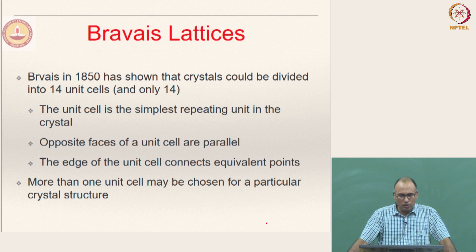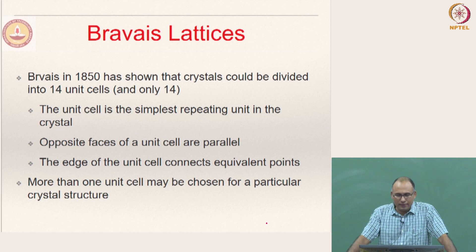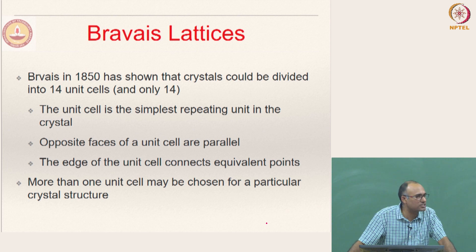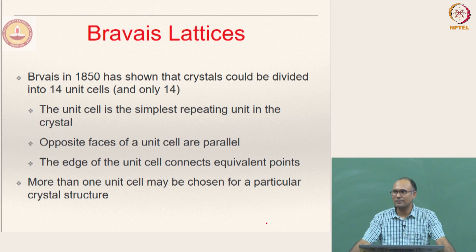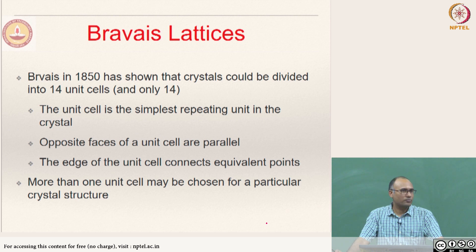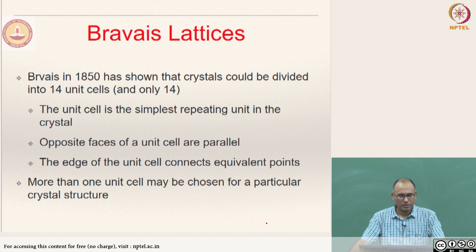Now we look at another important concept called Bravais lattices. This person called Bravais in the 1800s showed that crystals can be divided into primarily 14 different kinds of unit cells, and you will only ever have these 14 types. All crystal structures should fall under one of these 14 categories; their unit cell geometries must fall under one of these 14.